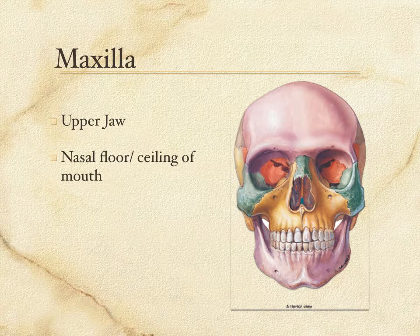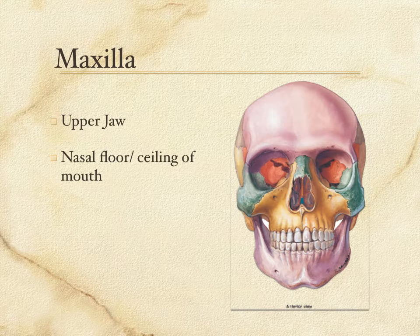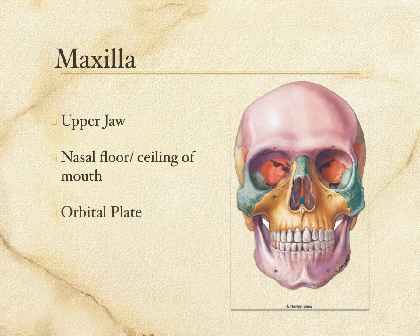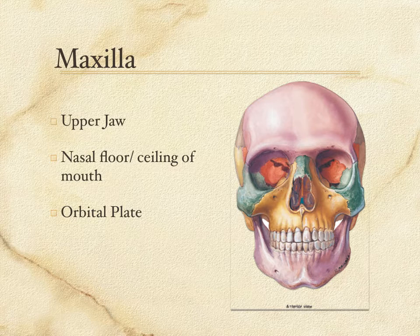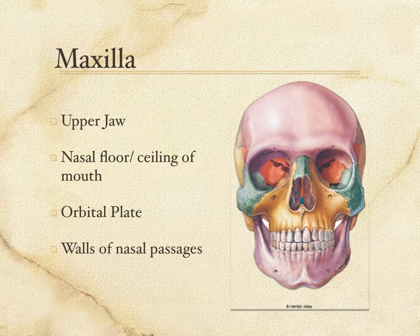The nasal cavity and the oral cavity are like a two-story apartment building where if you lived on the first floor, your ceiling is somebody else's floor. So the maxilla fills that role between the nasal cavity and the oral cavity. You can see it sweeps up and into the orbit, and a majority of the floor of the orbits is formed by the maxilla. In and around the nasal cavity, not only is it the floor, but it also forms the side walls of the nasal cavity, and it even sweeps all the way up to meet the frontal bone near the eyebrow area.